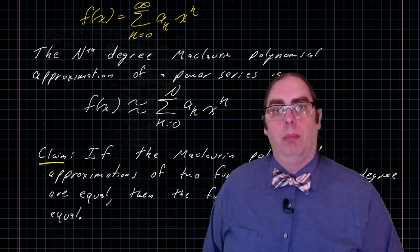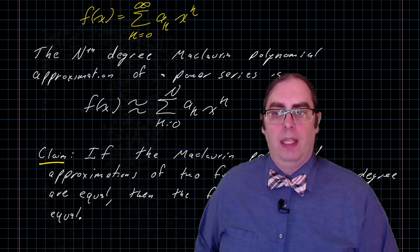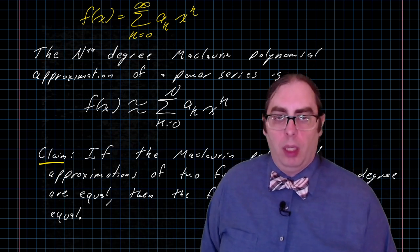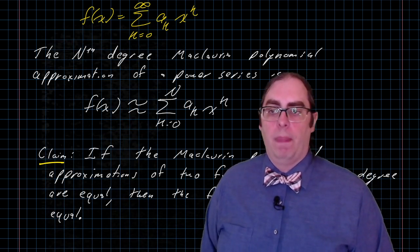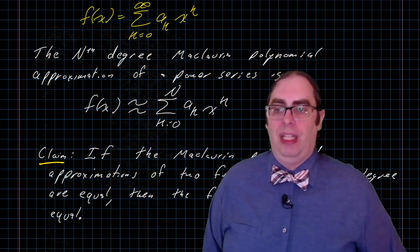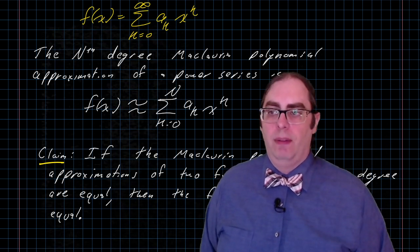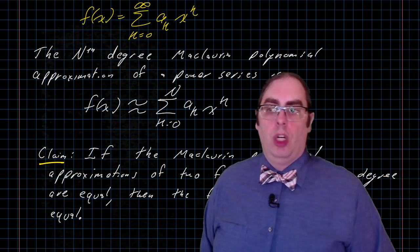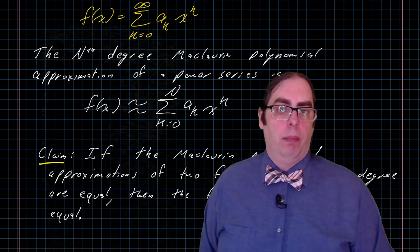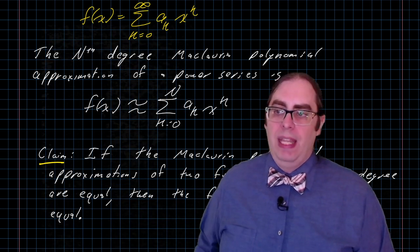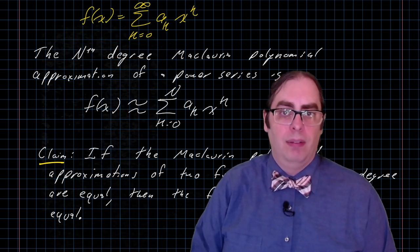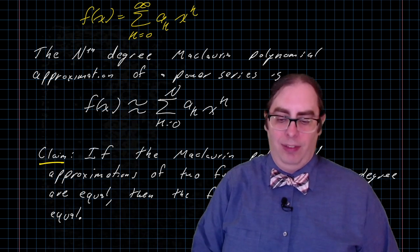That should seem weird to you. If you take a function, and you write its Maclaurin polynomial approximation, and you continue it out, and you have a general form for what the terms in the polynomial look like, and you use those terms to write a power series, then the power series has every Maclaurin polynomial equal, and in the limit, as you go the sum to infinity, the function itself is equal.